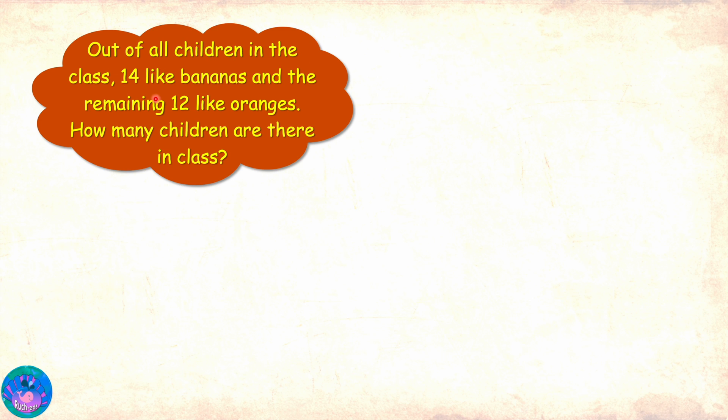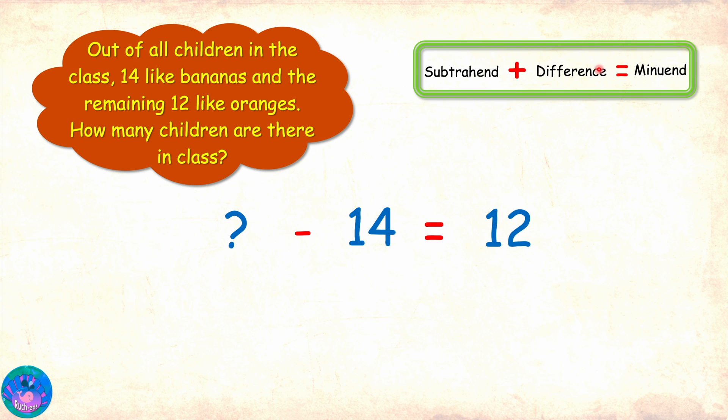Let's see one more. Out of all the children in the class, 14 like bananas and the remaining 12 like oranges. How many children are there in the class? Here we do not know the total number of children in the class. Now if from the total number of children in the class, we take out the number of children who love bananas, which means we subtract 14, the remaining number or answer is 12. So in this case, the minuend is unknown, the subtrahend is 14 and the difference is 12.